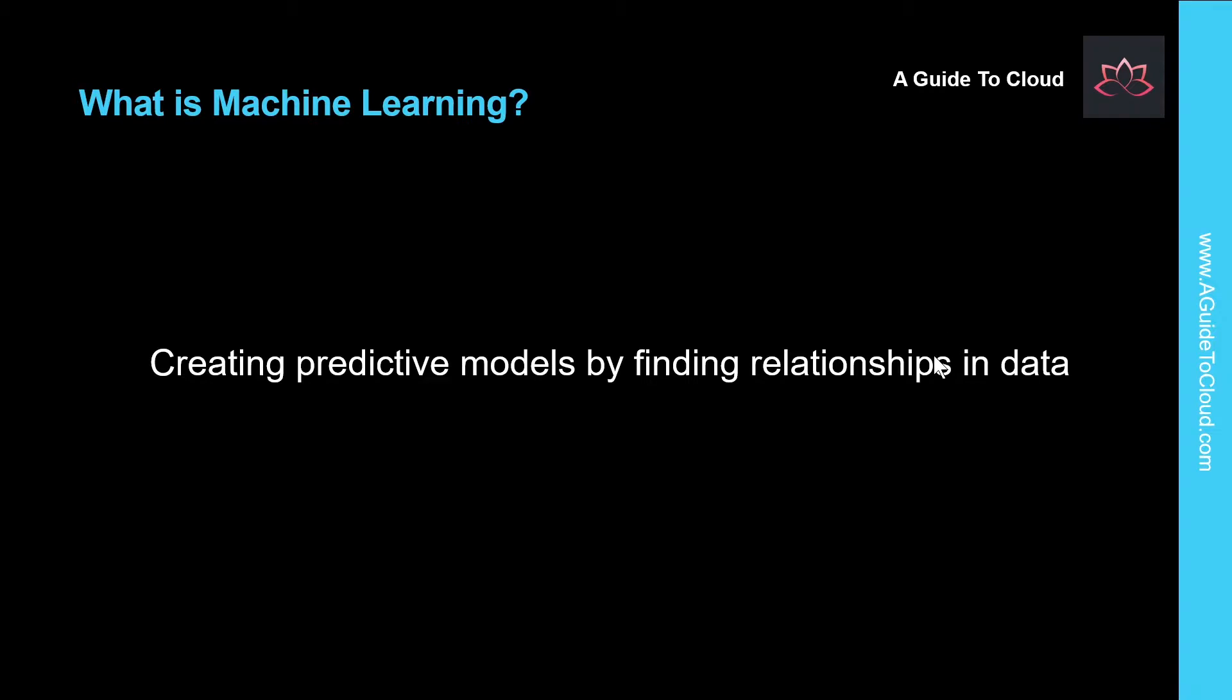So how do machines learn? The answer is from data. In today's world, we create huge volumes of data as we go about our everyday lives. From text messages, emails, social media posts, and photos we take on our phones, we generate massive amounts of information. More data is created by millions of sensors in our homes, cars, cities, public transport infrastructure, and factories. Data scientists can use all of that data to train machine learning models that can make predictions and inferences based on the relationships they find in the data.